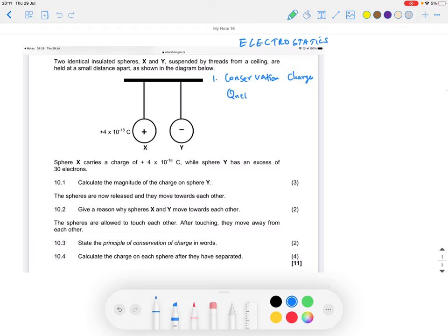qnet equals (q1 plus q2) over 2, where q1 and q2 are the amount of charges for the two spheres. So what I'm saying is if two identical spheres come into contact...